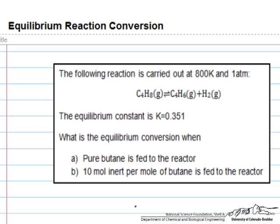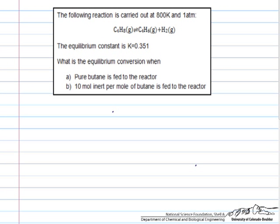This is an example problem of how to calculate the percent conversion of an equilibrium reaction. In this problem, we're studying the reaction of C4H8 goes to C4H6 plus H2. We're given an equilibrium constant and then asked what happens to the equilibrium conversion when pure butene is fed to the reactor and when 10 moles of inert per mole of butene is fed to the reactor.